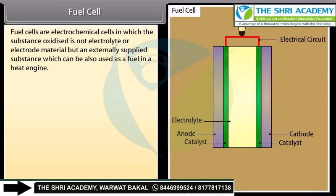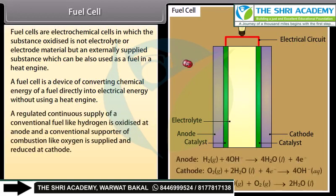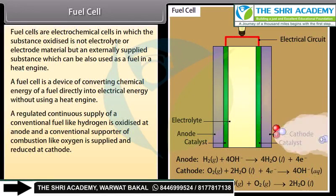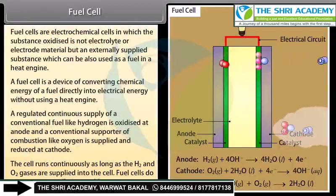Fuel cells are electrochemical cells in which the substance oxidized is not the electrolyte or electrode material, but an externally supplied substance which can also be used as fuel in a heat engine. A fuel cell is a device for converting chemical energy of fuel directly into electrical energy without using a heat engine. A continuous supply of hydrogen is oxidized at the anode, and oxygen is supplied and reduced at the cathode. The cell runs continuously as long as hydrogen and oxygen gases are supplied. Fuel cells do not cause any pollution problem.